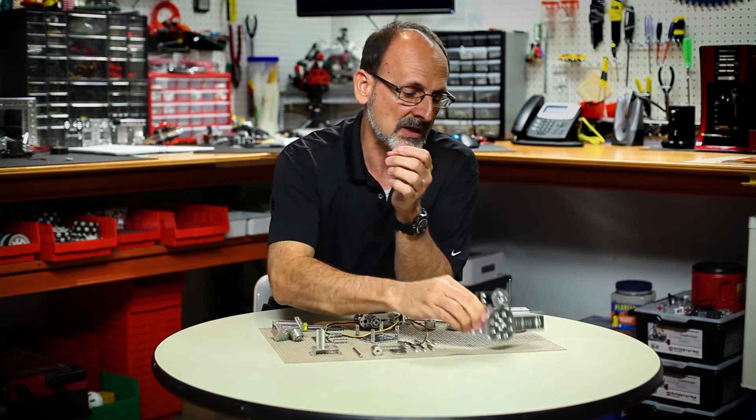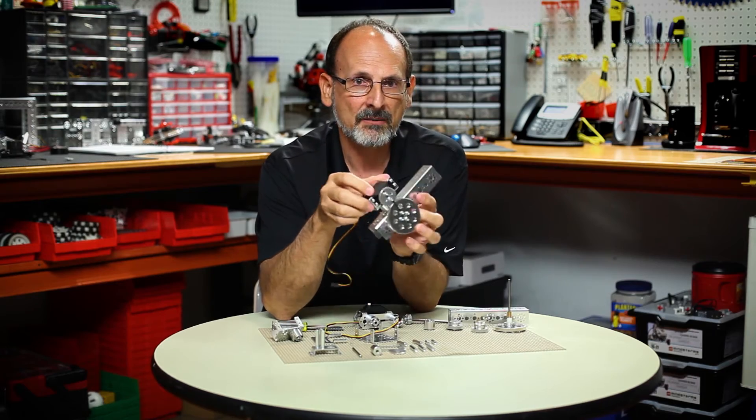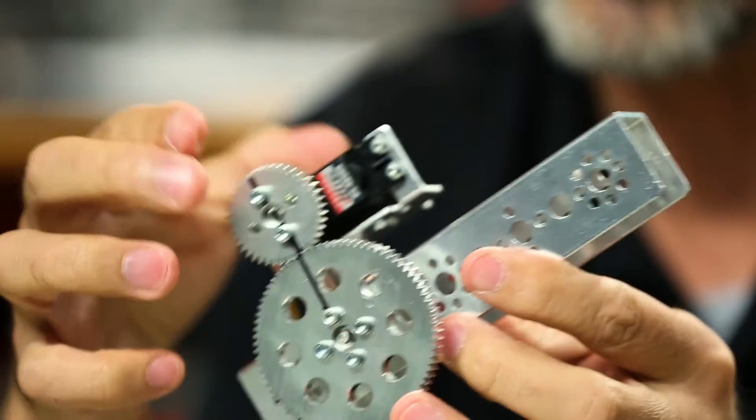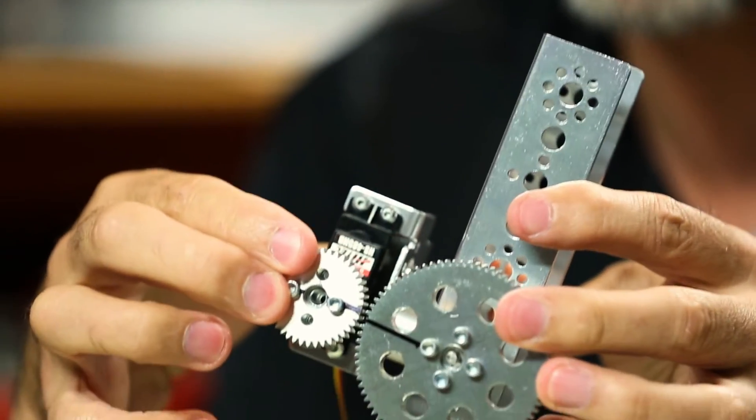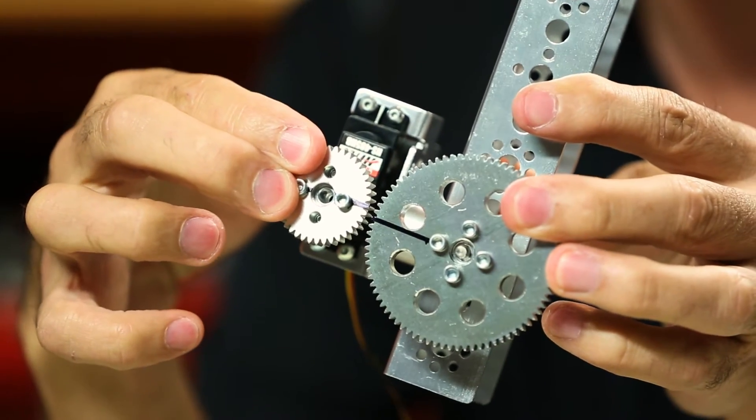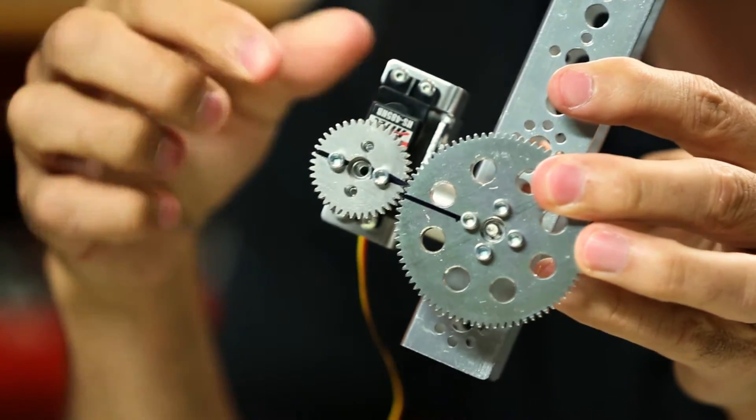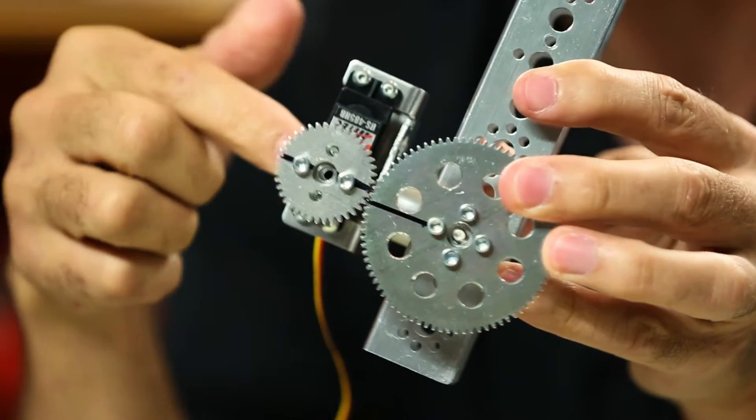I'm going to go back to my original example here. As this gear is under load it's going to tend to spread those gears apart which could cause slippage or could cause damage to the gears or the servo.